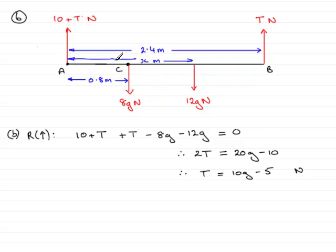Next, I can now start to head towards finding the distance X by taking moments. And the best place to take moments, although you can take them about any point, really is going to be A, because it eliminates the force here of 10 plus T newtons, because it passes through A.